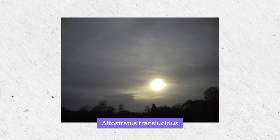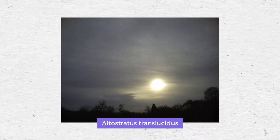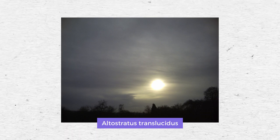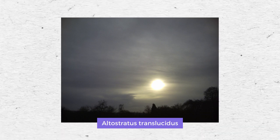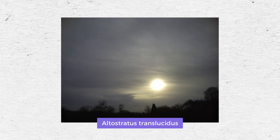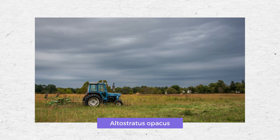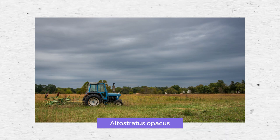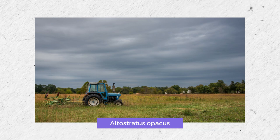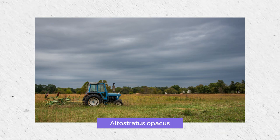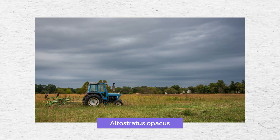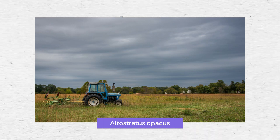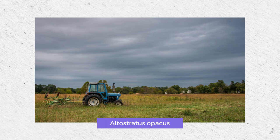The transparency of altostratus translucidus is higher than that of other species of clouds, because it is so thin that you can see the sun through it. Altostratus opacus is the opposite of altostratus translucidus — it is thick and you cannot see through it, and once it descends it will be transformed into a nimbostratus.